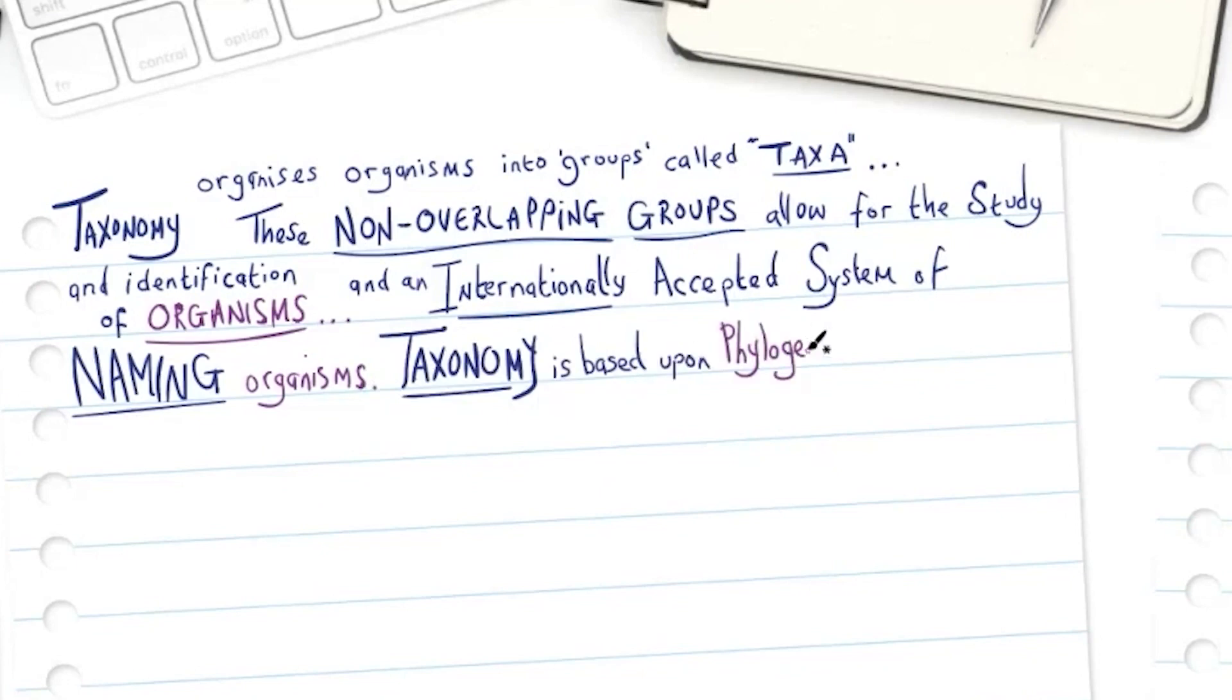Taxonomy is based upon phylogenetic classification and takes into account evolutionary relationships.